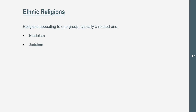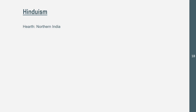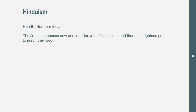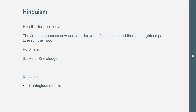Now the ethnic religions: Hinduism and Judaism appeal to one group, typically a related one, and won't diffuse as much as universalizing religions. Hinduism: the hearth is in Northern India, just like Sikhism. Your actions in life have consequences and there are righteous paths to reach their god or gods. It is polytheistic — they believe in multiple gods, actually millions of gods. Their sacred texts are the books of knowledge. It spread through contagious and relocation diffusion; relocation diffusion is more contemporary, and there's a lot of Hinduism diffusion, especially to America through brain drain patterns.